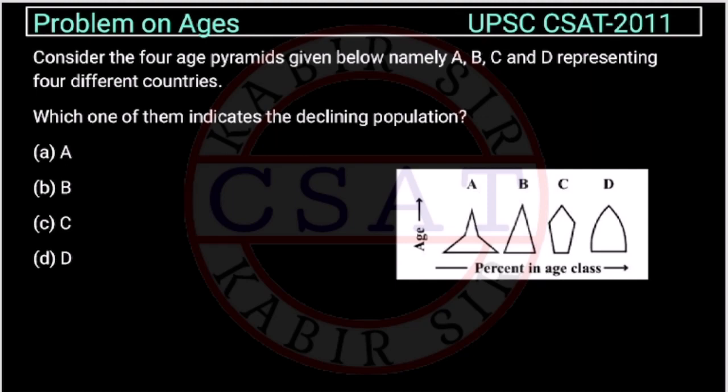Now, let us see one more question, asked by UPSC in CSAT exam of 2011. Consider the four age pyramids. So, they have given the age pyramid as shown in the figure, given below namely A, B, C, D representing four different countries.